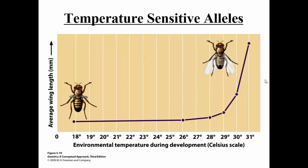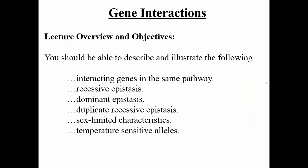Another concept is temperature-sensitive alleles. Looking at two flies with the exact same genotype, the fly on the left has very shriveled, vestigial-looking wings while the fly on the right has normal wings. The only difference between those flies is the temperature available during their embryonic development. This shows that environment affects the expression of genes, and these are called temperature-sensitive alleles.